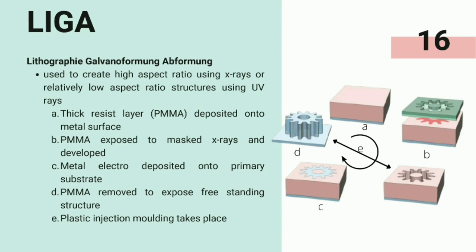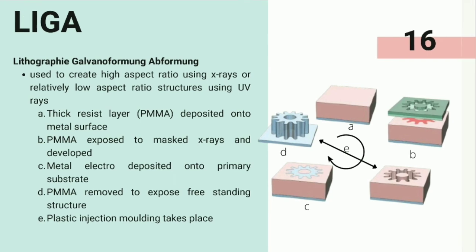LIGA, a German acronym for lithography, galvanoformung, abformung, is a process used to create high aspect ratio structures using X-rays, or relatively low aspect ratio structures using UV rays. The steps involve deposition of a thick resist layer of PMMA onto a metal surface. PMMA is then exposed to masked X-rays and developed, followed by metal electro-deposition onto the primary substrate. PMMA is then removed to expose the free-standing structure. Finally, plastic injection molding takes place and is repeated.